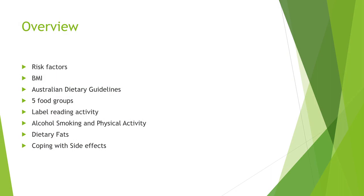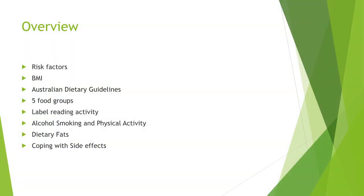Tonight I'll be talking about the risk factors associated with prostate cancer, BMI which some of you may or may not have heard of before, the Australian Dietary Guidelines and the five food groups. We'll do a label reading activity, talk about alcohol, smoking, and some physical activity, dietary fats, and coping with side effects if we have enough time — if not, the PowerPoint will be in your resources to look at later.